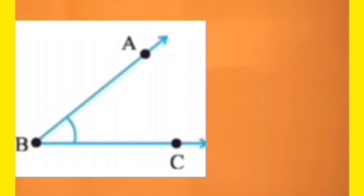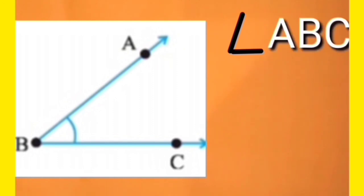Dear students, now let's learn to write names of angles. Here we have a figure A, B, C with us. There are three points of the figure: Point A, B and C. Now to write the names of the angles, first of all, we will make this type of sign. And the name of the angle can be written as angle ABC.